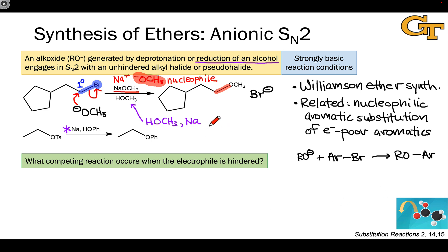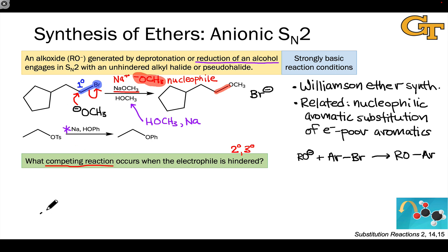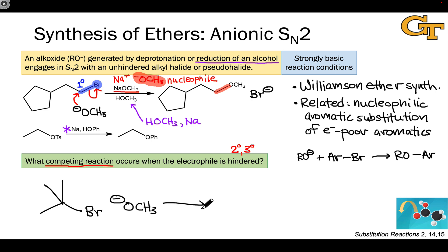The Williamson only works when the new bond formed involves a primary carbon. If the electrophilic carbon is secondary or tertiary — more sterically hindered than a primary carbon — this reaction will not work. We can understand the reason why if we think about the competing reaction that occurs when the electrophile is hindered. Think back to your Organic I course: what competing reaction occurs for a hindered electrophile, say tert-butyl bromide, in the presence of a strong base like sodium methoxide?